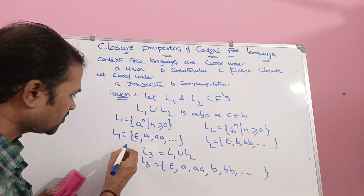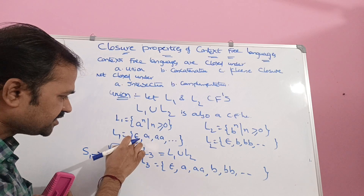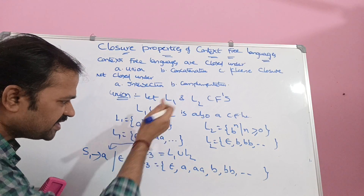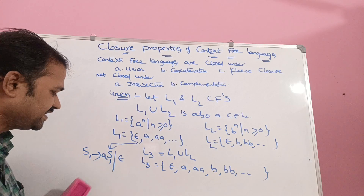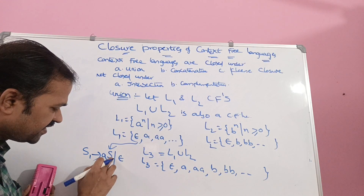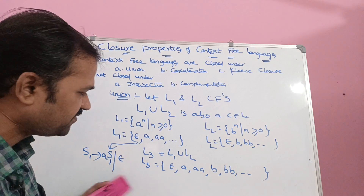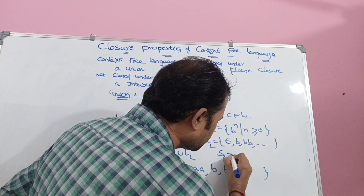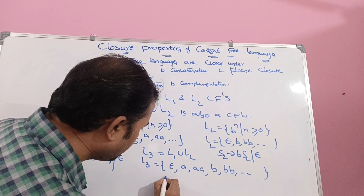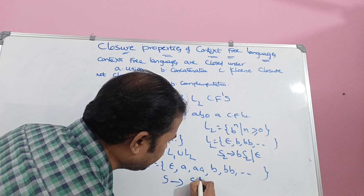Let us also generate the starting symbols for this grammar. The productions for L1 are: S1 → aS1 | epsilon. Here, 0 a's means epsilon; a S1 in place of S1 generates any number of a's. The productions for L2 are: S2 → bS2 | epsilon. For the new language L3, the starting symbol can be either S1 or S2.